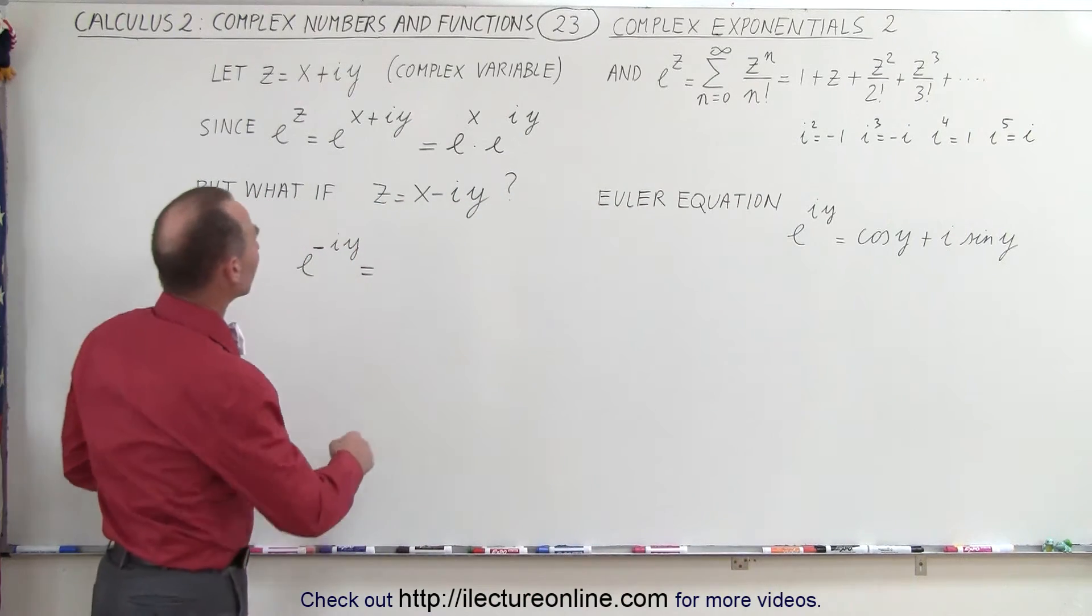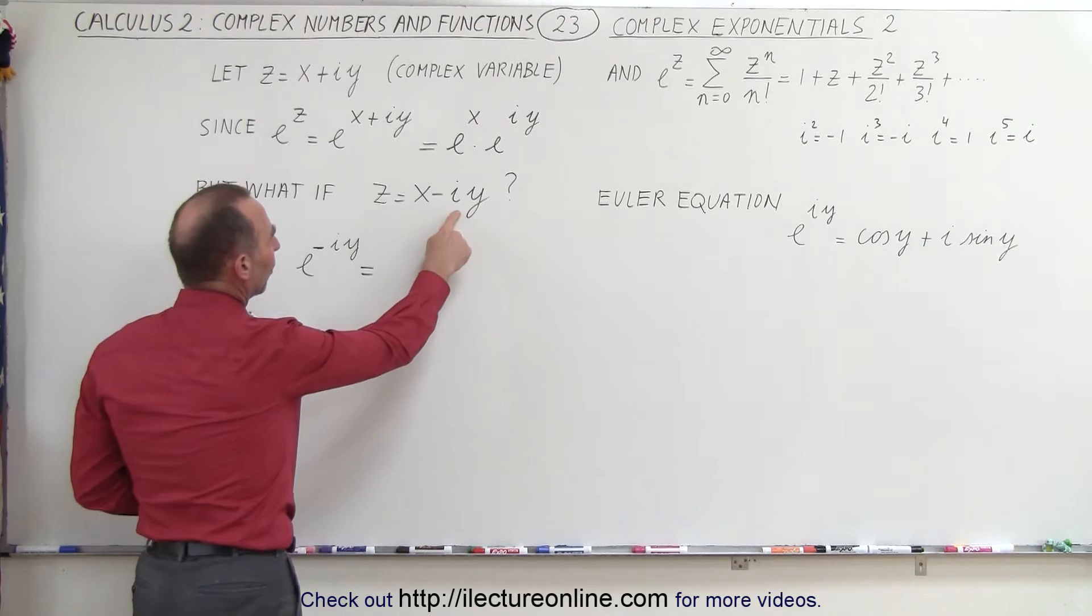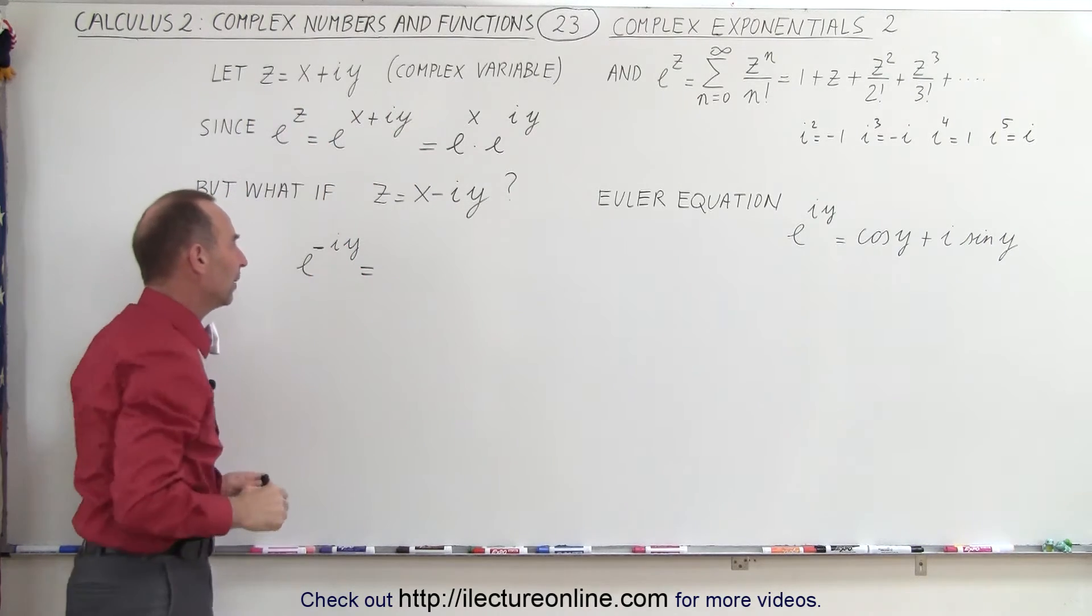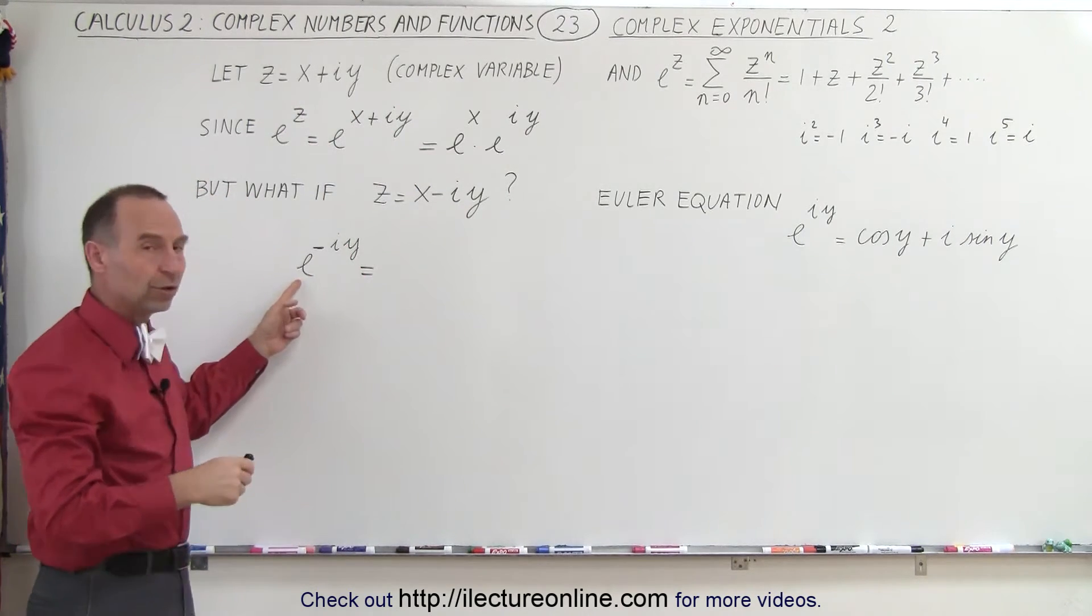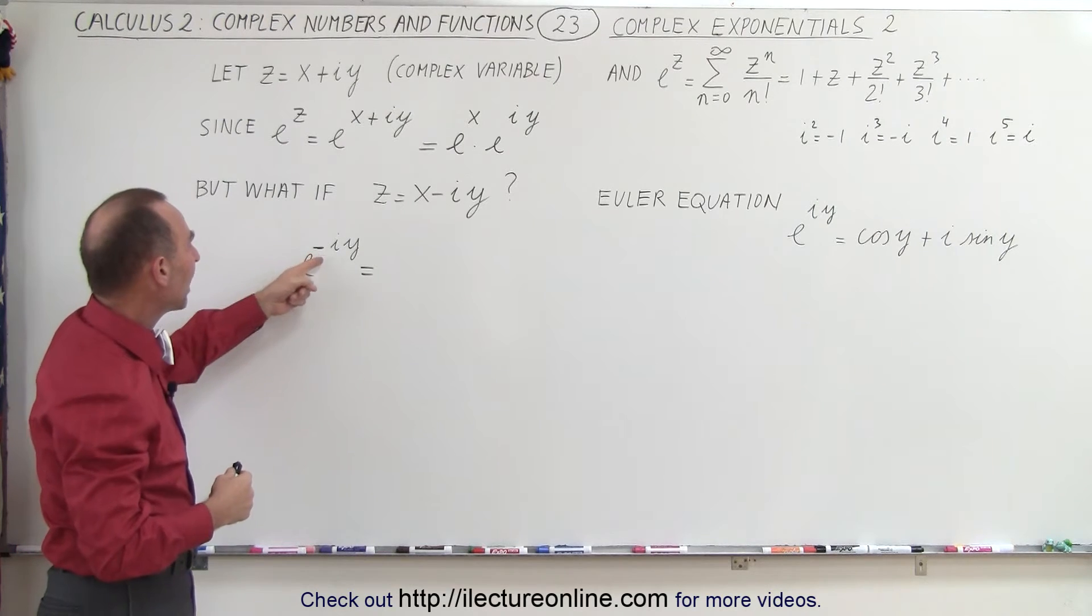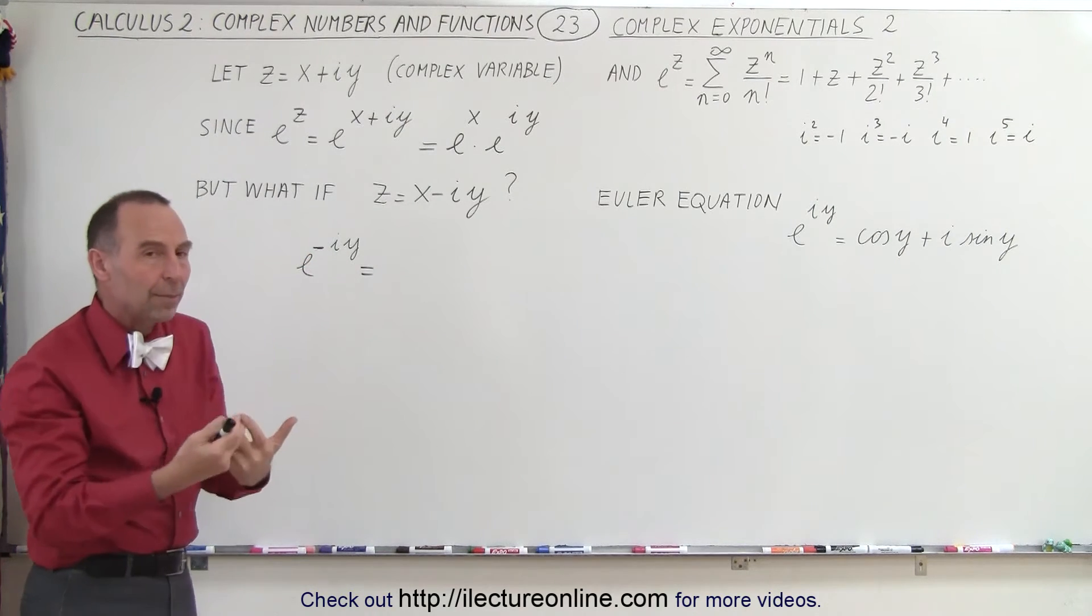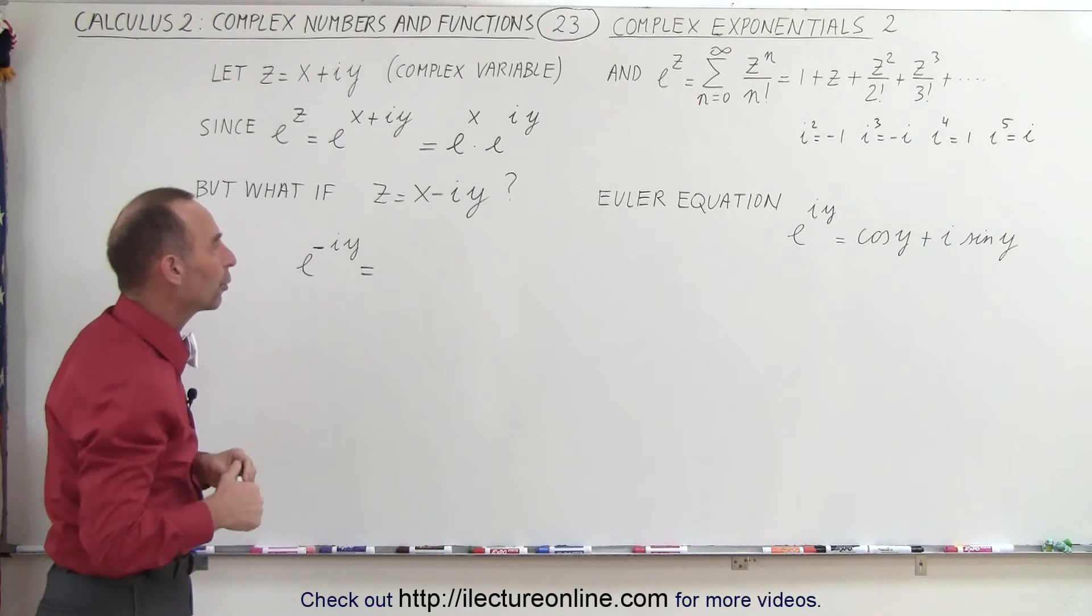But what if the complex variable is x minus iy instead of x plus iy? So then you end up with a portion of that complex variable as e to the minus iy and how do we come up with an equivalent Euler equation for that?